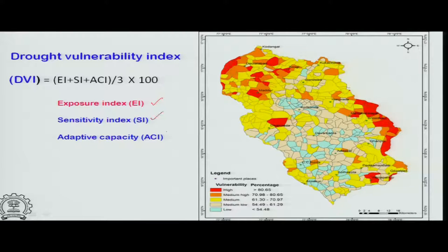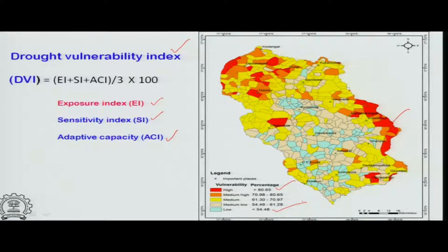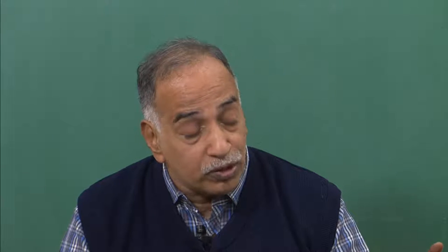Combining exposure, sensitivity, and adaptive capacity, we develop the Drought Vulnerability Index (DVI). This tells you the percentage of area affected by vulnerability — for example, 80% of one area is affected while another area has vulnerability of only 54%, with the rest having adequate adaptive capacity. The DVI is generated based on meteorological, hydrological, agriculture, and socio-economic factors. For mitigation, you can improve storage capacity, water distribution capacity, or people's ability to adapt, and frame management practices on different scales.